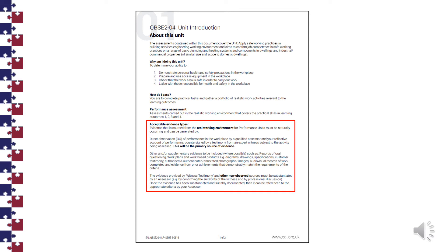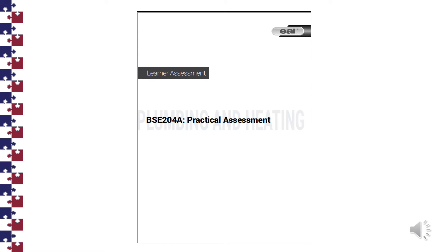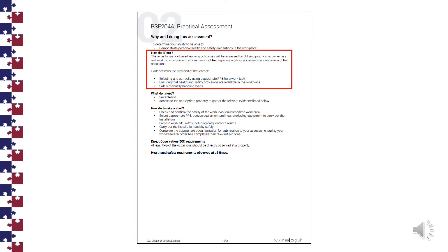It is your responsibility to prove beyond reasonable doubt that the evidence provided is authentic and yours. The first assessment is BSE 204A. This is the code for this practical assessment. It states that this assessment has to take place at a minimum of two different addresses — which we will call jobs — and on a minimum of two of the tasks. On these tasks you must provide evidence of, for example, selecting and using PPE or safely manually handling loads.